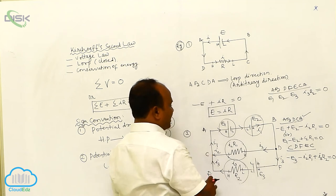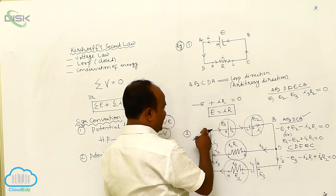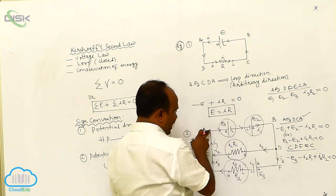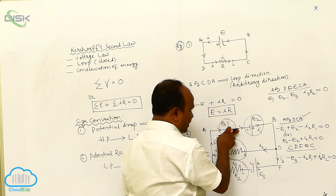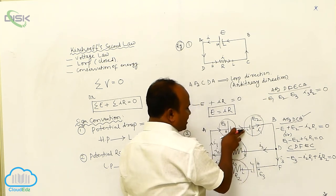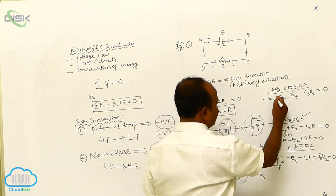Now, if I travel A, B, D, F, E, C, A, this is called the arbitrary direction. As I am travelling higher to lower, drop is taken as negative. Therefore, negative. As I am travelling lower to higher, rise is taken as positive. This is positive.